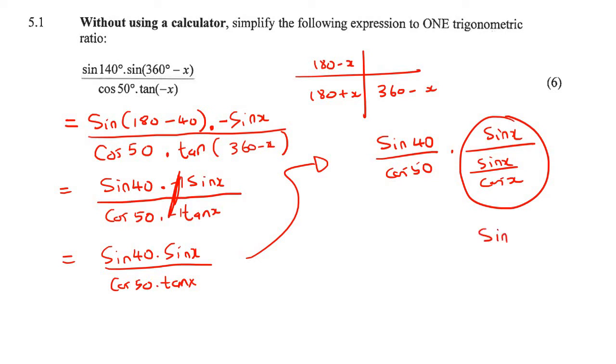We can think of that as sin x over 1, then multiply by cos x over sin x. I'm just doing this part here. These sins cancel, and you're left with cos x over 1. So that part is sin 40° over cos 50°, and this whole thing becomes cos x over 1.